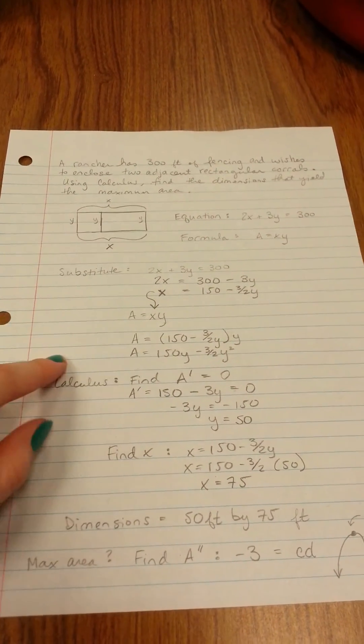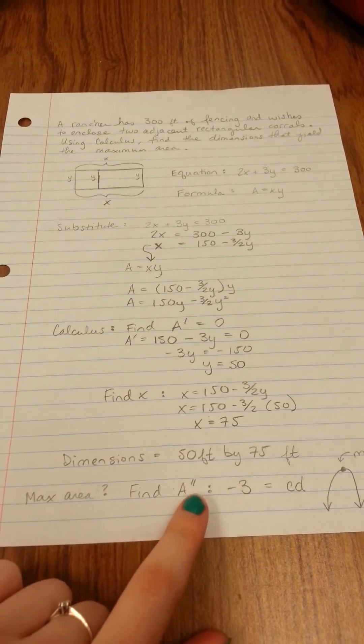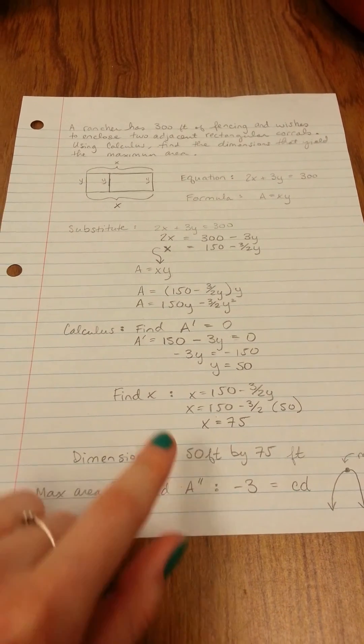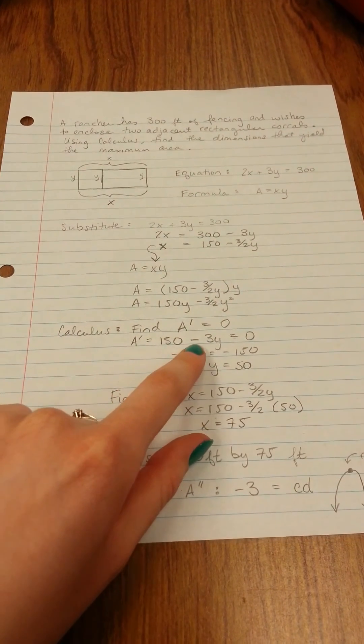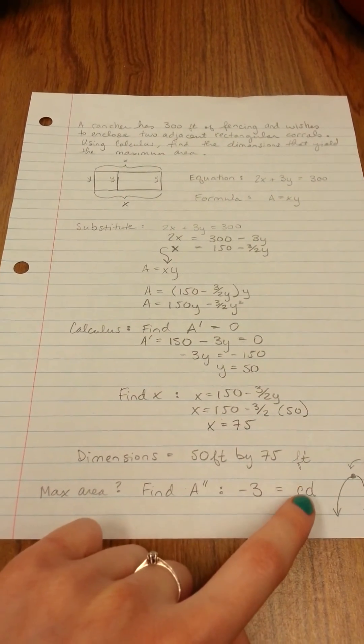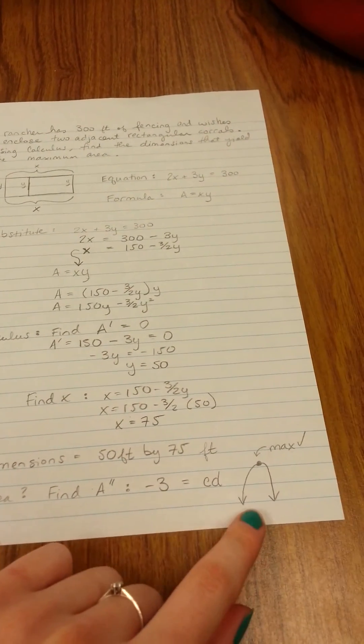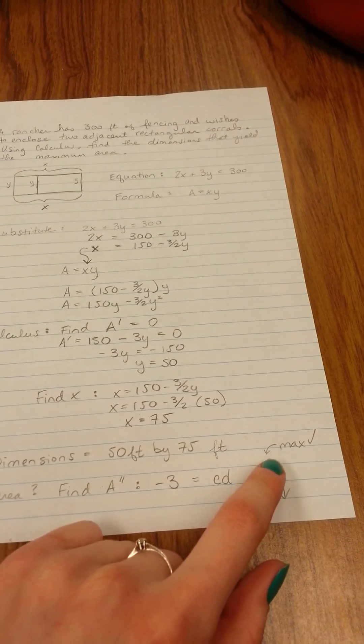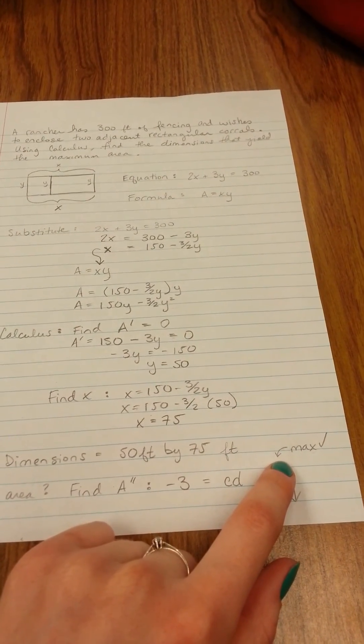But we want to make sure that we did find a maximum, so we take the second derivative of A. So the first derivative of A was 150 minus 3Y. The second derivative is going to be negative three. This tells us that we're concave down, and if we draw a picture of a parabola that's concave down, we can see that we're going to have a max.